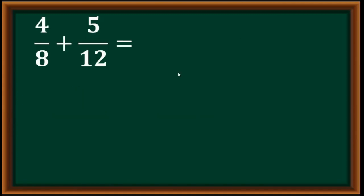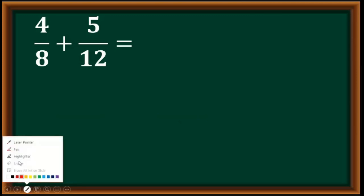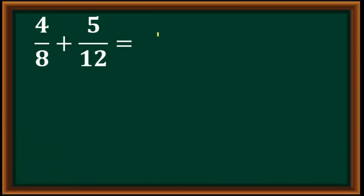Let's have 4 over 8 plus 5 over 12. Take a look at this screen. So how do we solve this kind of problem? Since they are dissimilar fractions — the given are 4 over 8 plus 5 over 12 — we have different denominators. We call that dissimilar fractions.